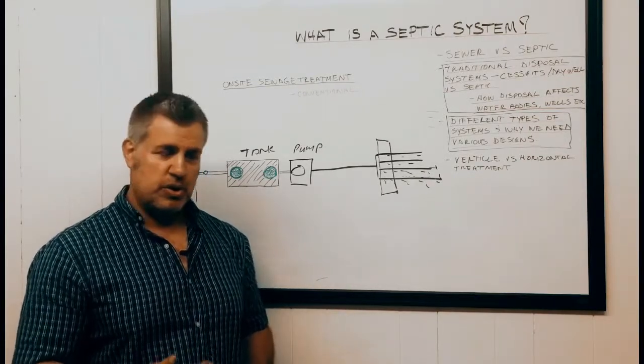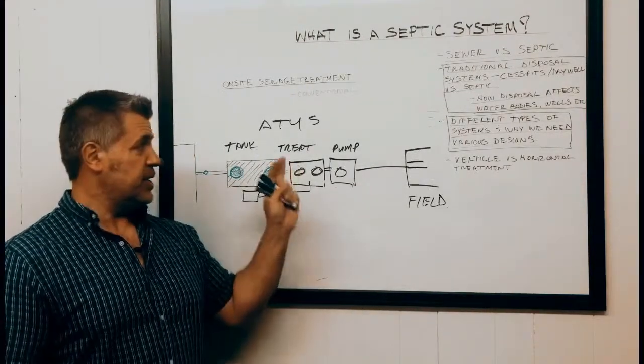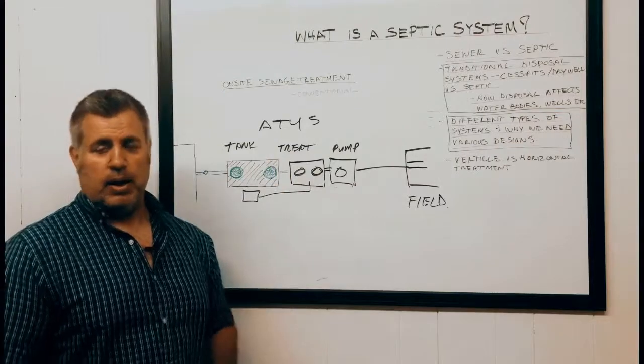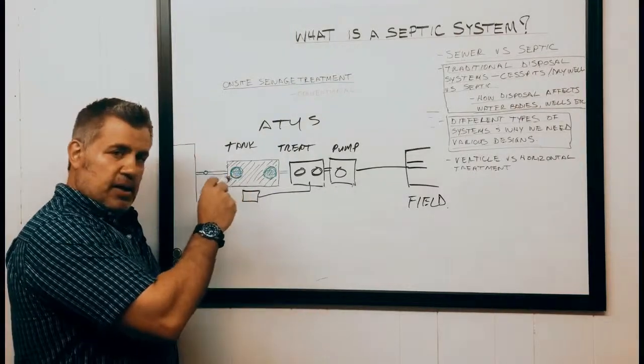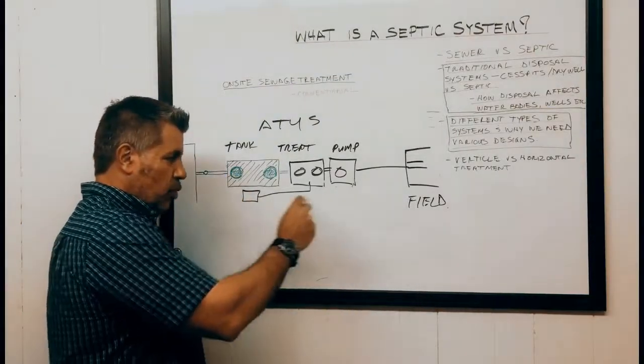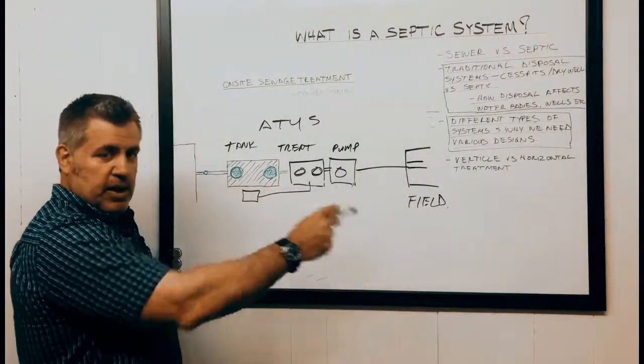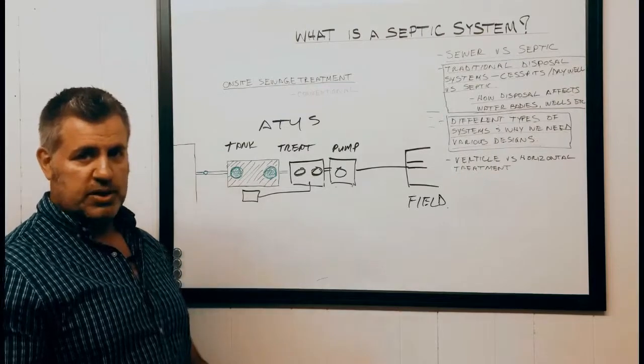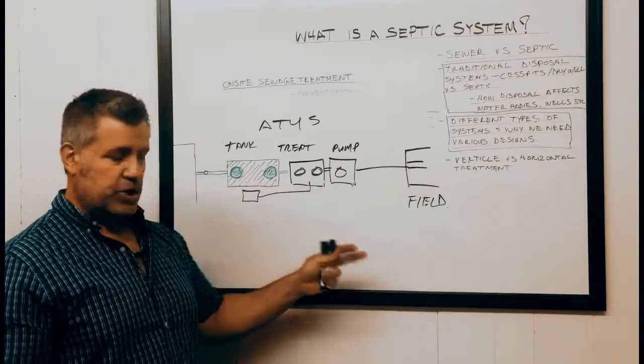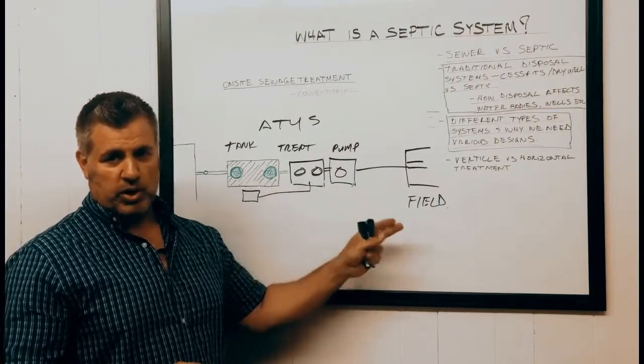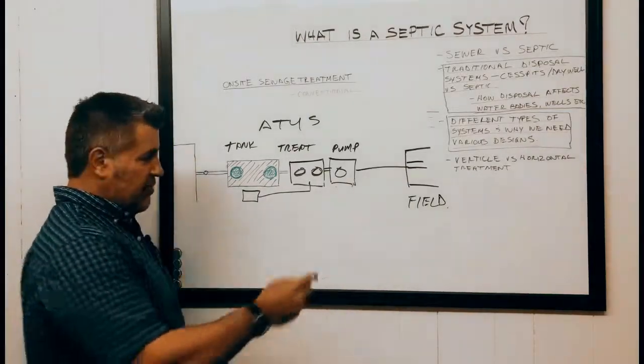Next I'm going to cover the topic briefly of ATUs or aerobic treatment units. Basically what it means is we're going to have a lot more treatment in our tankage area before that wastewater makes its way onto the field. This is important if you have smaller lots or if you're hitting boundaries where you're meeting certain setbacks, and we want to make sure that that wastewater is well treated to meet that criteria that we're looking for in our design.